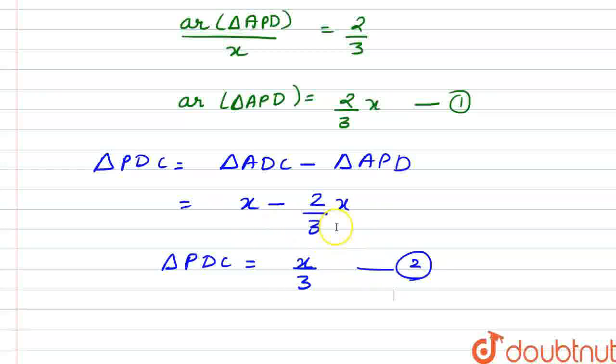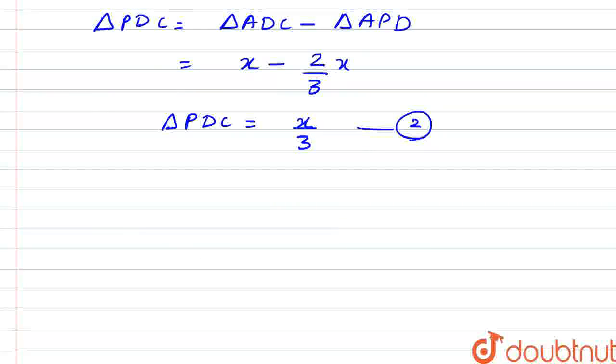Now, let's simply find out the ratio of area of triangle PDC to area of triangle ABC.